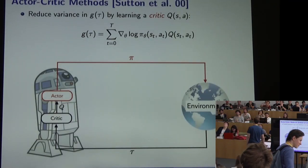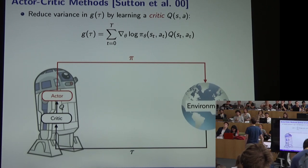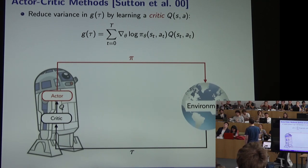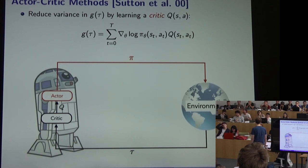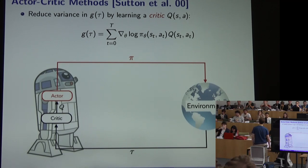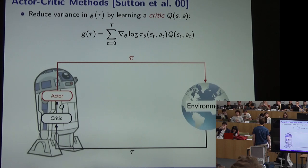We know from our discussion of value function methods that a pure Monte Carlo approach relying on sample returns won't hit the sweet spot of the bias-variance tradeoff. That's why we prefer temporal difference methods that bootstrap off an estimate of the value function. Bringing that idea to policy gradient methods yields a family called actor-critic methods — actor is another name for a policy, and critic is a value function learned from data and used to construct an estimate of the gradient that the actor follows to improve the policy.